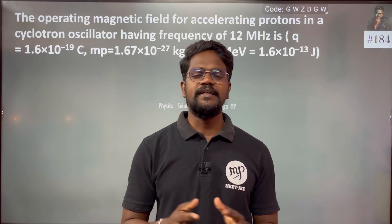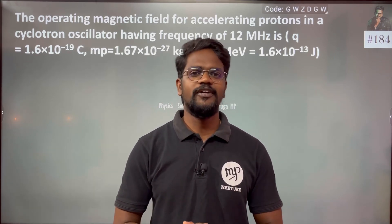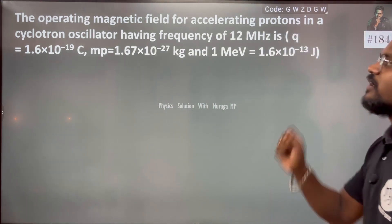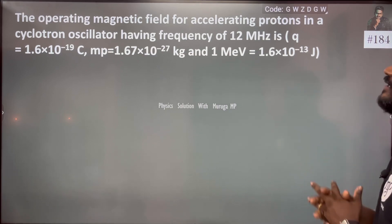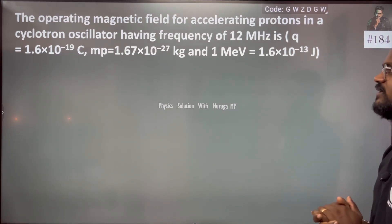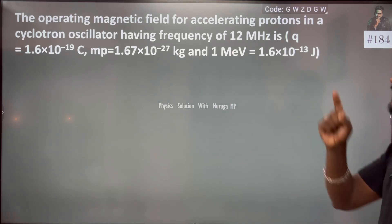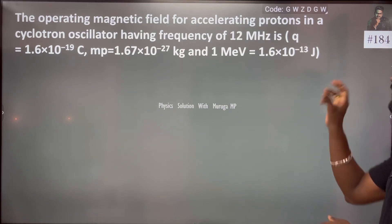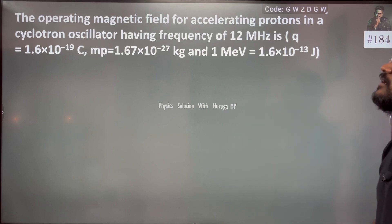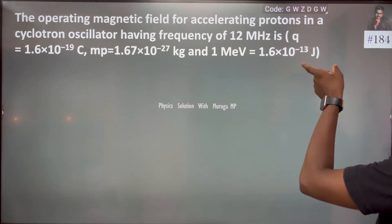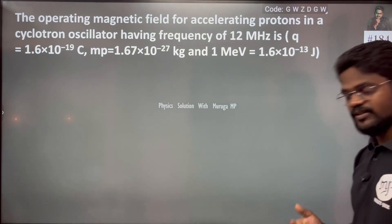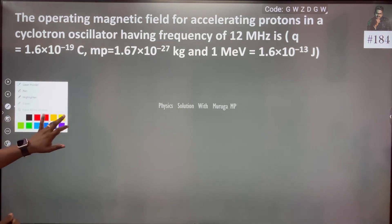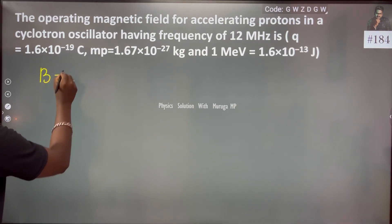In a cyclotron oscillator, given the frequency, charge, and mass of the proton, and one mega electron volt value — the operating magnetic field for accelerating the proton in the cyclotron. What is the magnetic field? That is the given data.